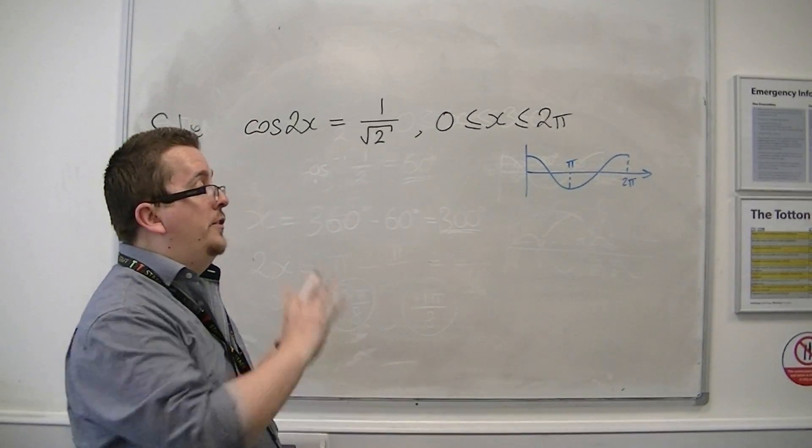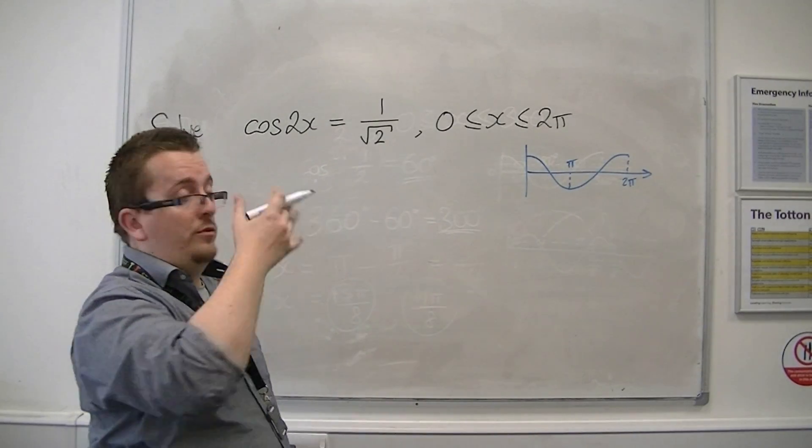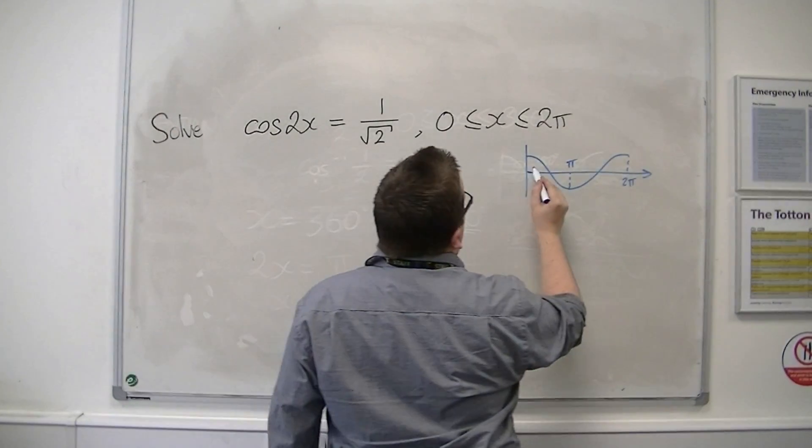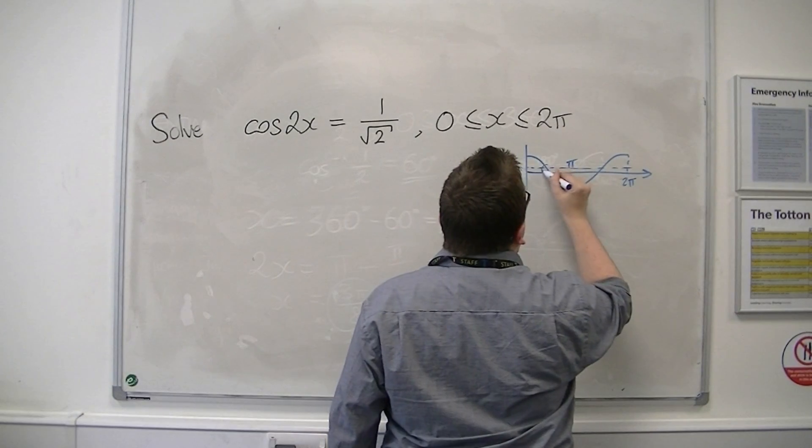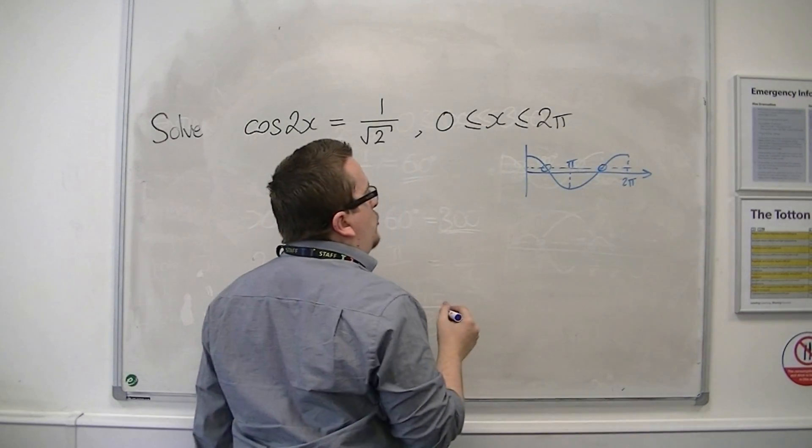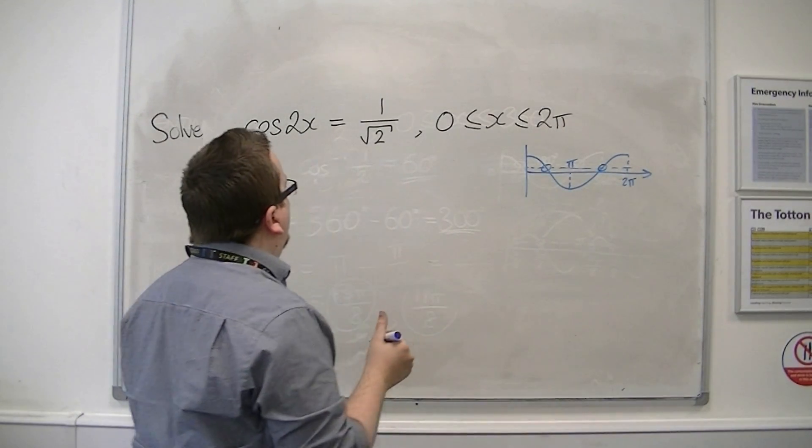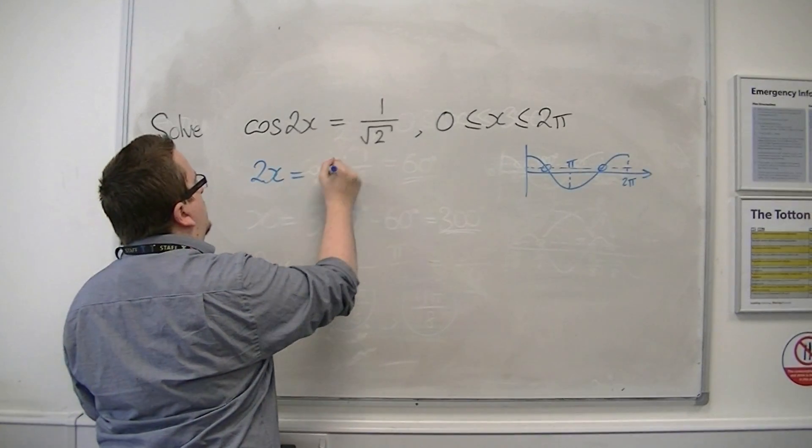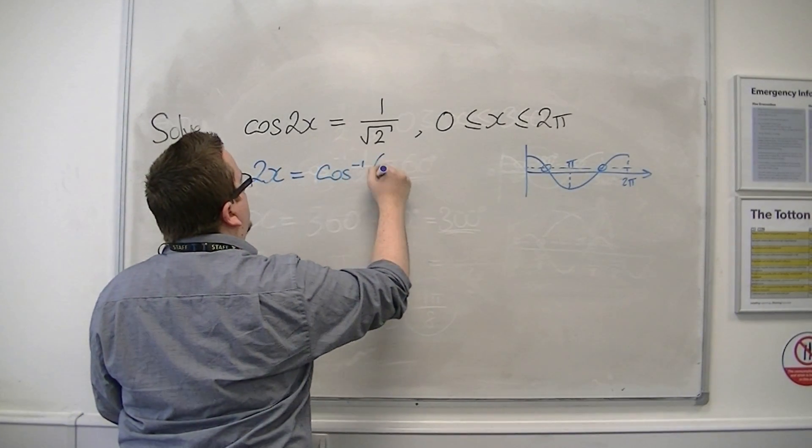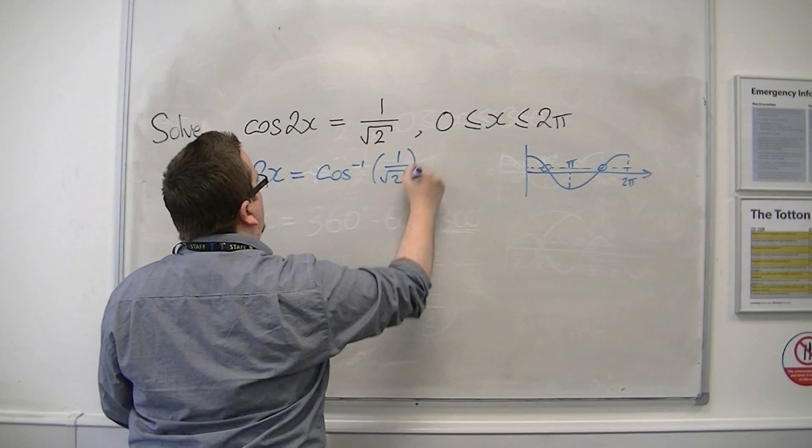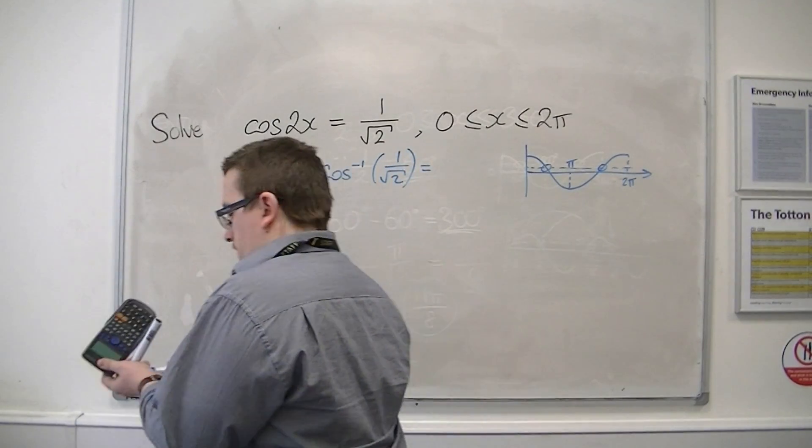just the normal cosine curve between 0 and 2pi. 1 over root 2. I've got two solutions there. So I inverse cosine both sides. Make sure your calculator is in radians.